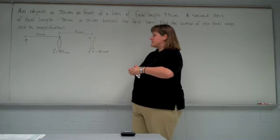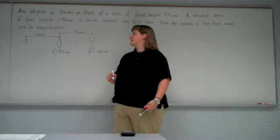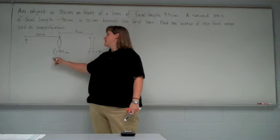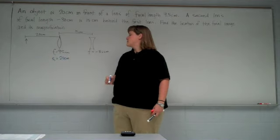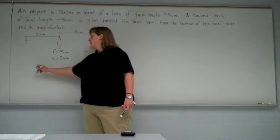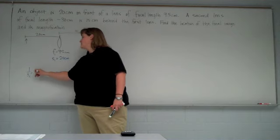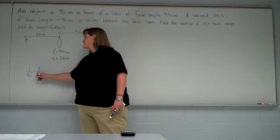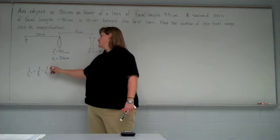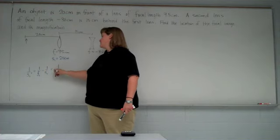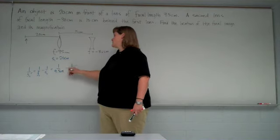So for our lens one, I'll call this F1. We know the focal length. S1, the object distance is 20 centimeters. So we can find S1 prime using our equation. 1 over S prime is going to be 1 over F minus 1 over S. So 1 over 9.5 centimeters minus 1 over 20 centimeters.